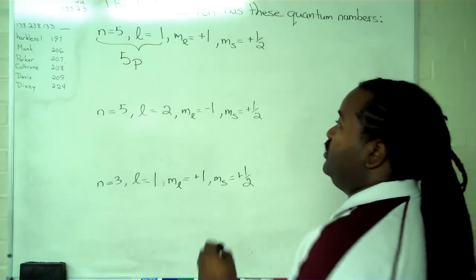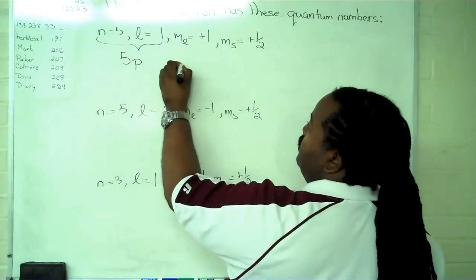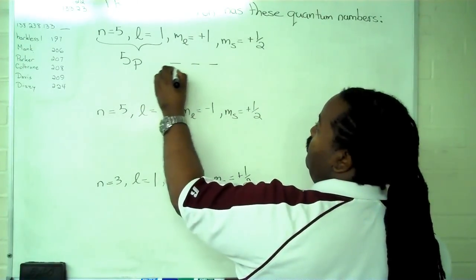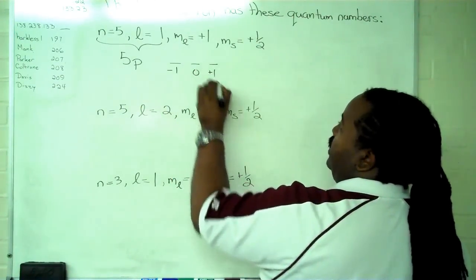The next step is to determine our occupancy. Since we have p orbitals, we have three of them labeled minus 1, 0, and plus 1.